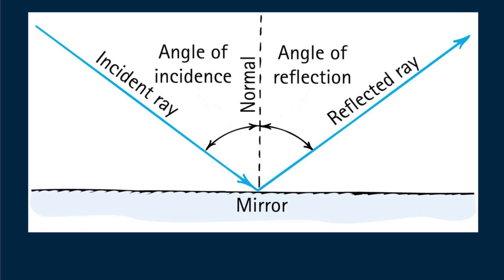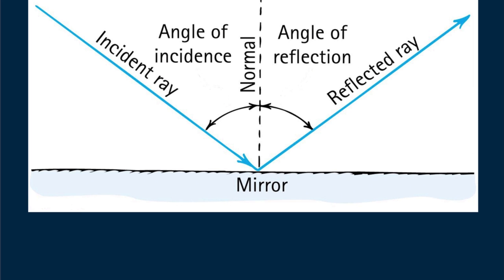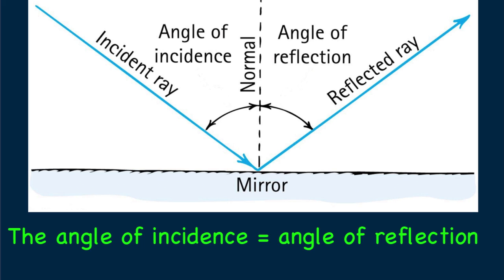The interesting thing is that whether a lot is reflected or only a little, and no matter what the reflecting surface is made of, the light obeys the same simple law of reflection if the surface is smooth. The law of reflection is: the angle of incidence equals the angle of reflection.